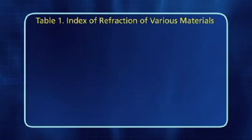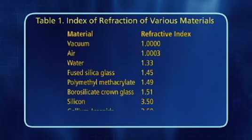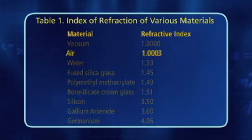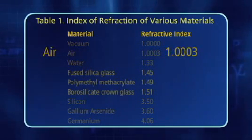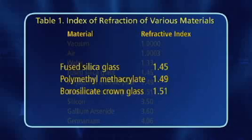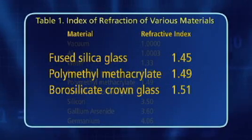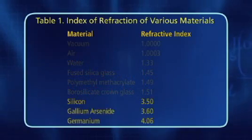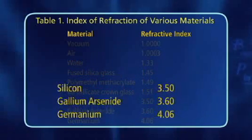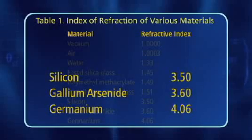The refractive indices of some common media are given in Table 1. Note that the change of velocity in air is negligible and that most common glasses are between 1.45 and 1.51. This means that the light slows down to about two-thirds its vacuum speed in glass optical fiber. Semiconductors used in telecommunications usually have indices greater than 3.